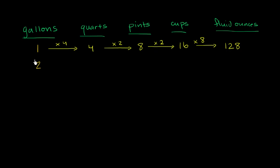Now let's do the same thing with two gallons. I encourage you to pause the video and try converting it into quarts, pints, cups, and fluid ounces on your own first. Well, same idea. One gallon is equivalent to four quarts, so two gallons are two times four quarts, or eight quarts.